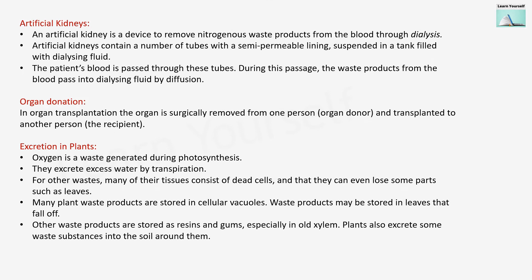When the kidney is not functioning properly, we have to perform a procedure known as dialysis. It is also known as artificial kidneys — a device to remove nitrogenous waste products from the blood. The artificial kidney contains tubes with a semi-permeable lining suspended in a tank filled with dialyzing fluid. The patient's blood is passed through these tubes, and waste products from the blood pass into the dialyzing fluid by diffusion, purifying the blood.